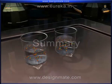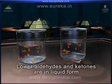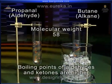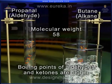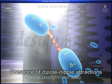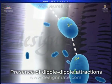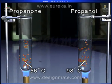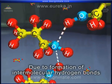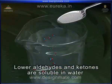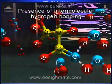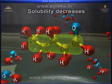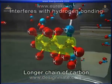Summary. Lower aldehydes and ketones are in liquid form at room temperature, while higher aldehydes and ketones are solid at room temperature. Boiling points of aldehydes and ketones are higher than those of alkanes of comparable molecular weights, due to dipole-dipole attractions. Boiling points of aldehydes and ketones are lower than those of alcohols of comparable molecular weights, due to intermolecular hydrogen bonds among alcohols. Lower aldehydes and ketones are soluble in water due to intermolecular hydrogen bonding between the aldehyde or ketone molecule and water, but solubility decreases as the longer carbon chain interferes with this hydrogen bonding.